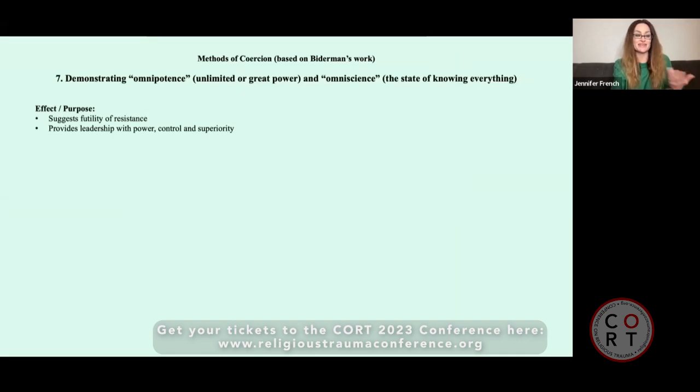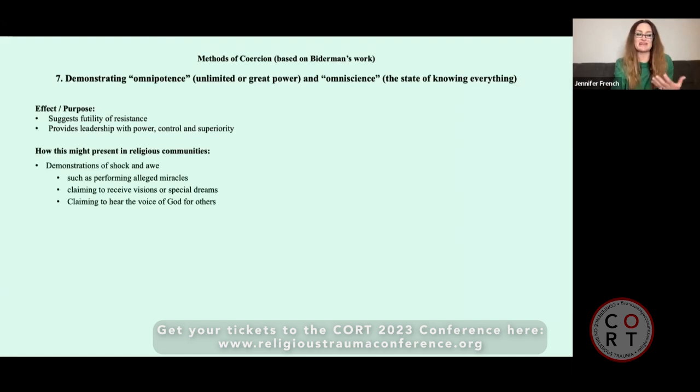So omnipotence and omniscience. This has the effect of this, actually, it suggests a futility of resistance, so cripples people, and provides leadership with power, control, and superiority. Some religious communities, this might come in demonstrations of shock and awe, such as performing alleged miracles, claiming to receive visions or special dreams. And often this is used to determine things for others. So in my case, the visions, or whatever you want to call them, for me, by my teachers, resulted in an arranged marriage, career changes, up and moving to a new city to open a new center, and parents with priest parents who had children did this, tearing their kids away from their friends and environments.